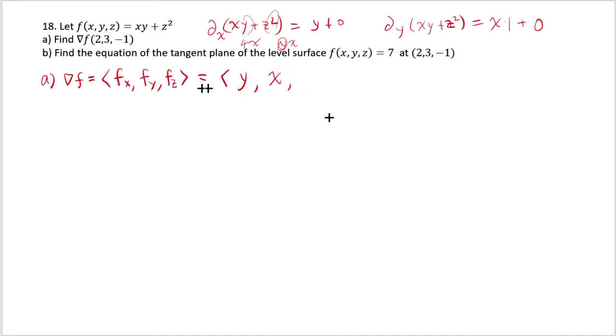And fz, this time if you differentiate by z, both x and y are considered as constant. So if you differentiate xy it's just going to give you 0. And z squared differentiates to 2z. So you get 2z. That's your gradient.